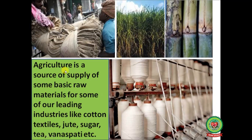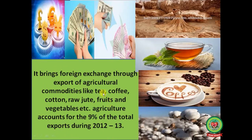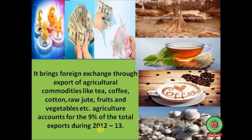Agriculture is a source of supply of some basic raw materials for leading industries like cotton textiles, jute, sugar, tea, and vanaspati. It also brings foreign exchange through the export of agricultural commodities like tea, coffee, cotton, raw jute, fruits, and vegetables. Agriculture accounted for 9 percent of total exports during 2012–13.